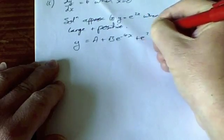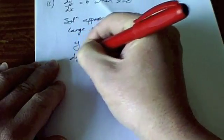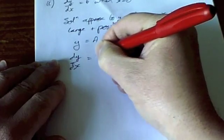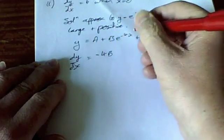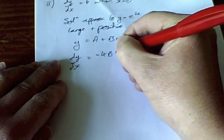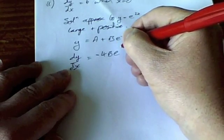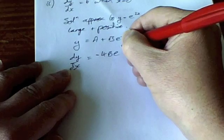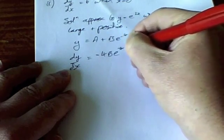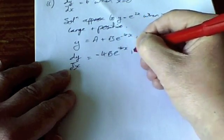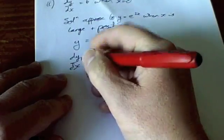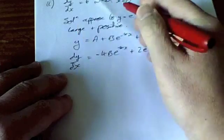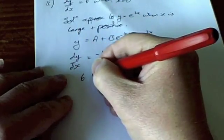That's e^(2x), so dy/dx now is going to equal -4Be^(-4x) plus 2e^(2x) and we know that that equals 6 when x equals 0 so I can write 6 here.